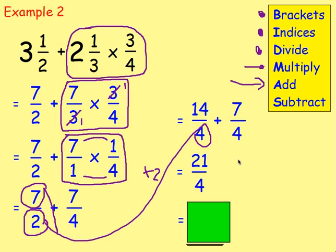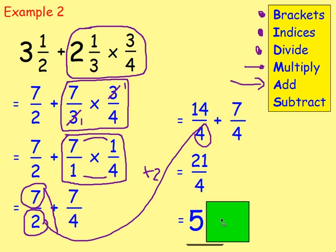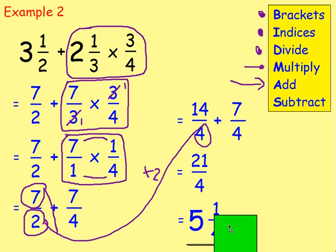Twenty-one quarters is an improper fraction, so it's best to rewrite it as a mixed number. Twenty-one divided by four: four goes in five times with a remainder of one. Because we're working with quarters, we keep it as one quarter. Our answer is five and one quarter.